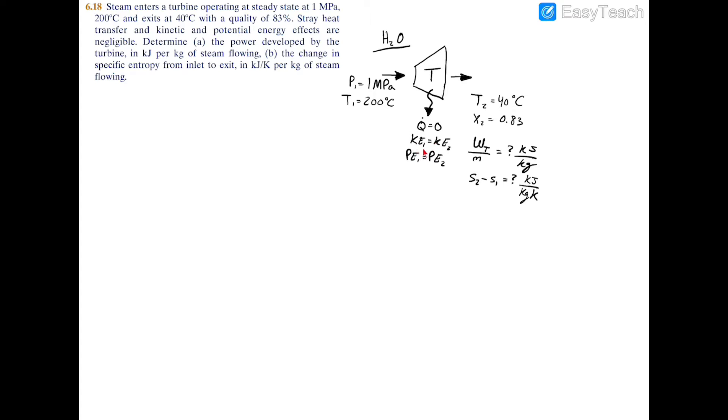We're asked to find the power of the turbine in kilojoules per kilogram of steam flowing through it, and we're also looking for the change in specific entropy from the inlet to the exit, which is in kilojoules per kilogram kelvin of steam flowing.